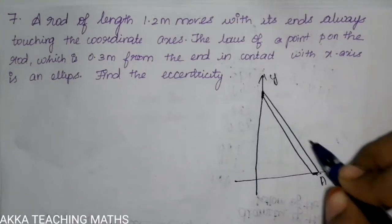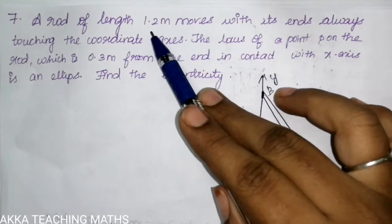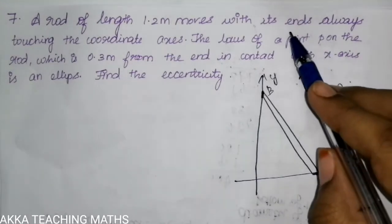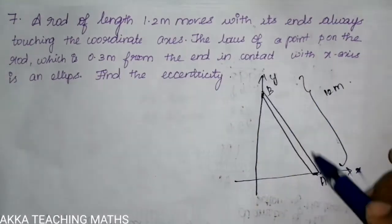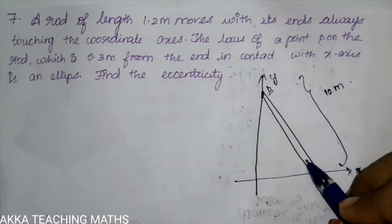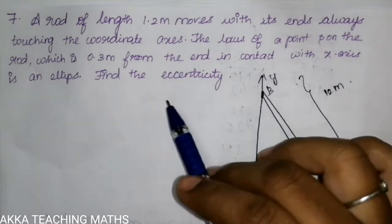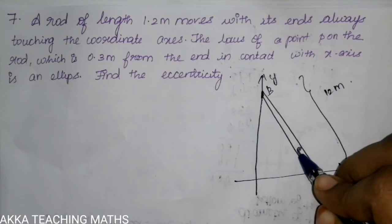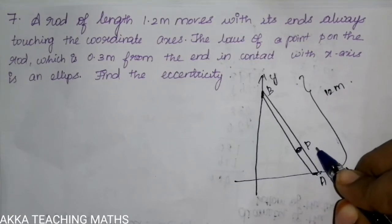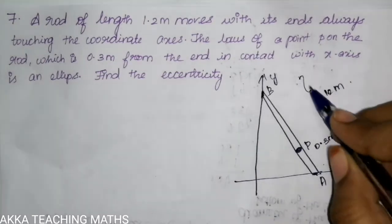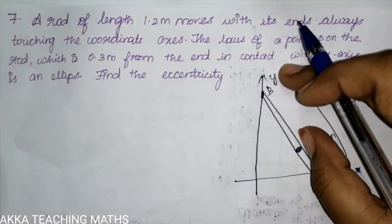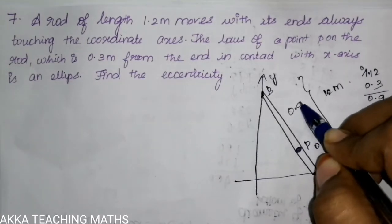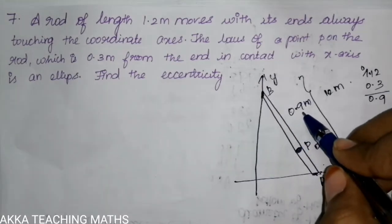Now we have points A and B on the rod. The rod's full length is 1.2 meter. The point P is 0.3 meter from the end in contact with the x-axis. So AP is 0.3 meter and the remaining length BP is 0.9 meter.